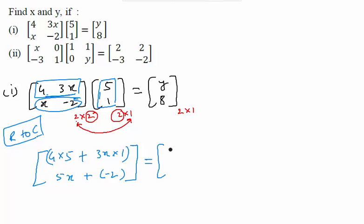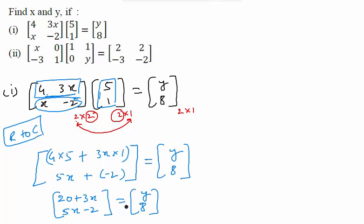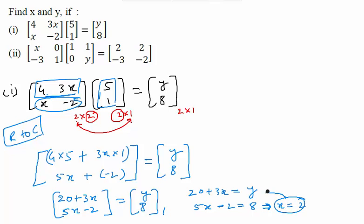The equality is already given: the result equals y and 8. Looking closely, the first element is 20 plus 3x, and the second element is 5x minus 2, which equals y and 8. When comparing two matrices, corresponding elements must be equal. So 20 plus 3x equals y, and 5x minus 2 equals 8. Solving the second equation directly gives x equals 2. Substituting x equals 2 into the first equation gives y equals 26.